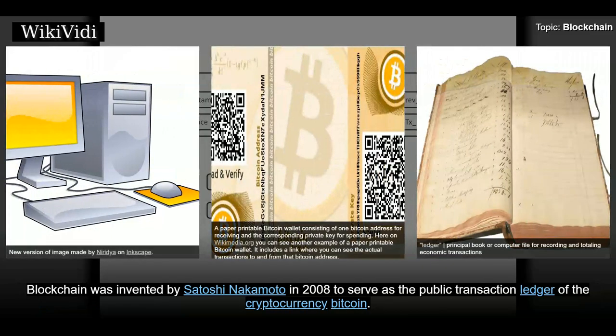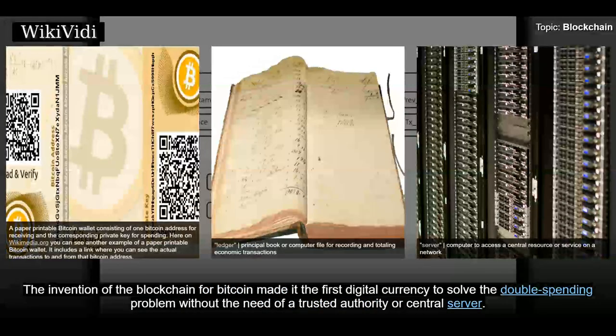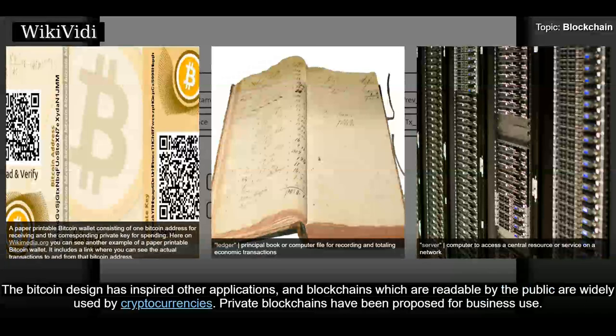Blockchain was invented by Satoshi Nakamoto in 2008 to serve as the public transaction ledger of the cryptocurrency Bitcoin. The invention of the blockchain for Bitcoin made it the first digital currency to solve the double spending problem without the need of a trusted authority or central server. The Bitcoin design has inspired other applications, and blockchains which are readable by the public are widely used by cryptocurrencies.